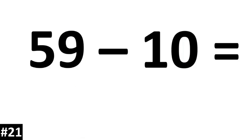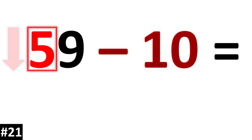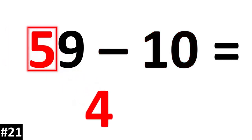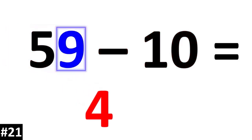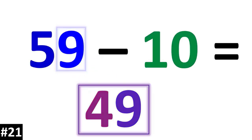59 minus 10. The 5 tens is going to go down to 4 tens. The ones value stays the same, so 59 minus 10 is 49.